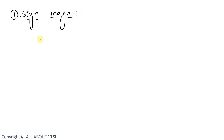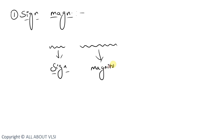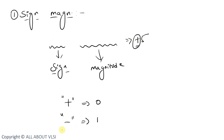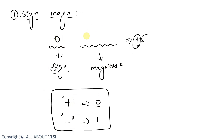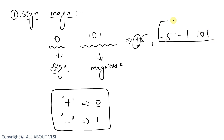In sign-magnitude form, the MSB bit is allocated for the sign and the remaining bits represent the magnitude. Plus is represented with 0 and minus with 1. So plus 5 is represented as 0101 — 0 for the sign and 101 for the magnitude — and minus 5 is represented as 1101.